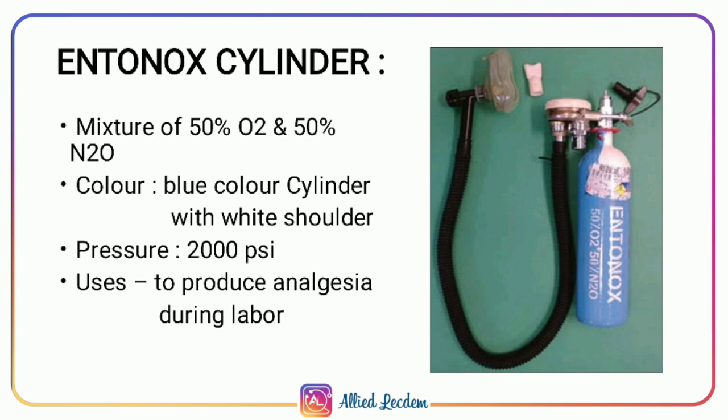Entonox is a mixture of 50% oxygen and 50% nitrous oxide. The cylinder is color coded as blue body (from nitrous oxide) with white shoulders (from oxygen), giving it a blue body with white shoulder appearance. The pressure is 2000 psi. The major use of Entonox is to produce analgesia during labor.